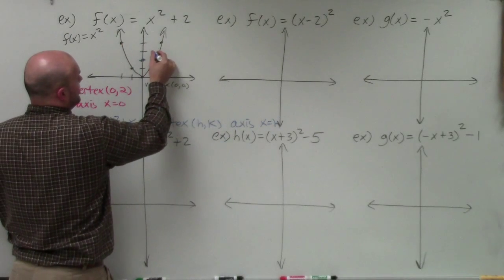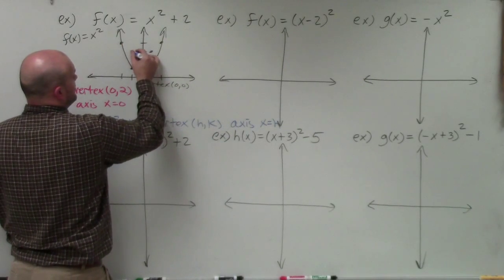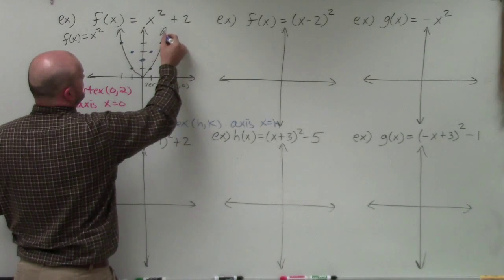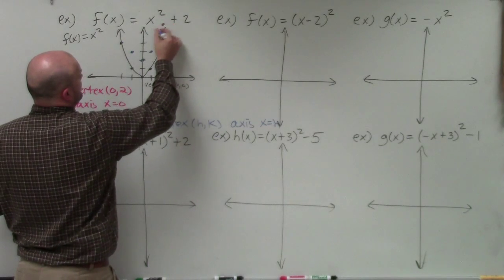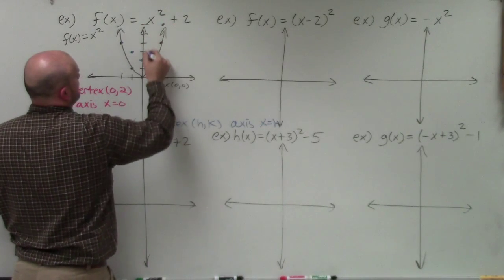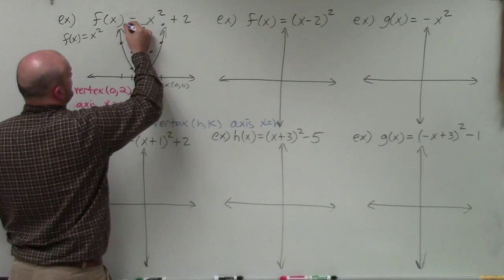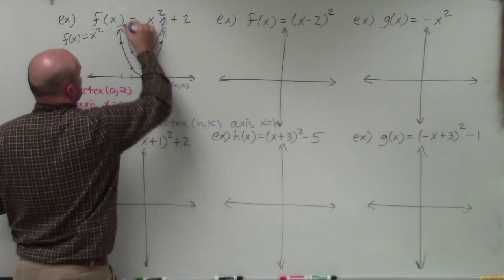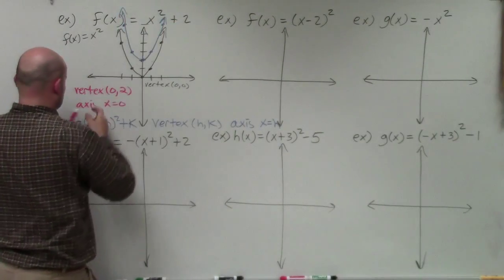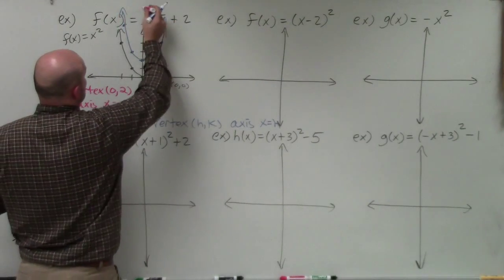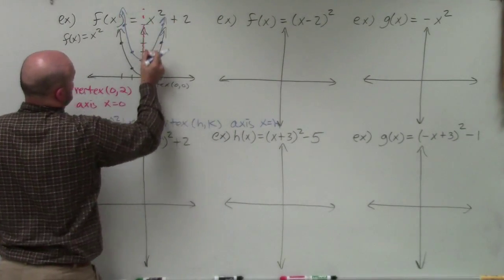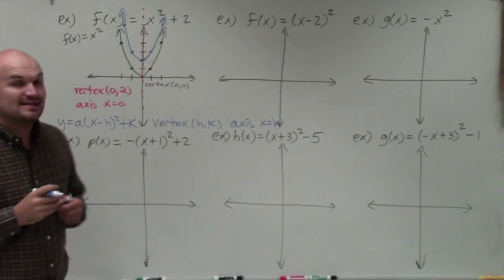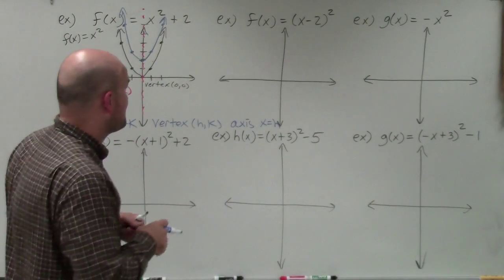So I'm still going to go over 1, up 1, over 1, up 1, and then over 2, up 4. And the axis of symmetry is right there on the y-axis.